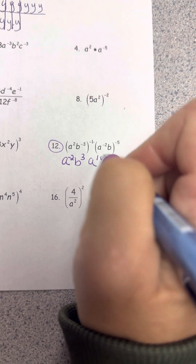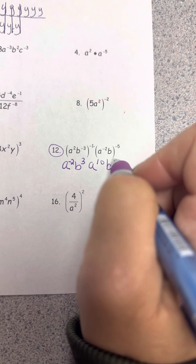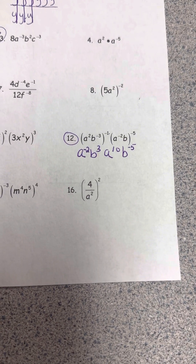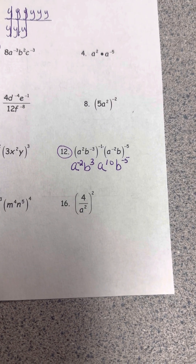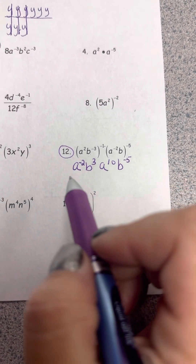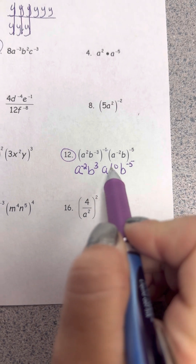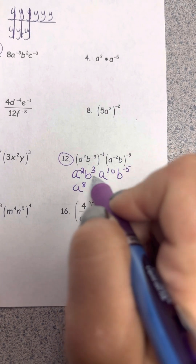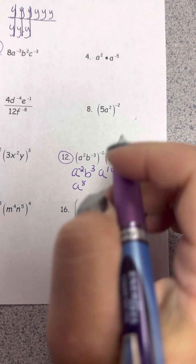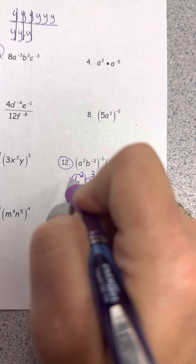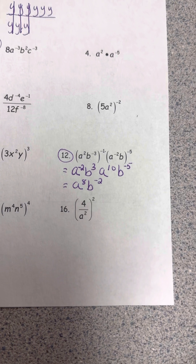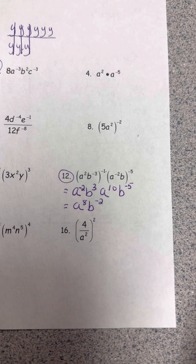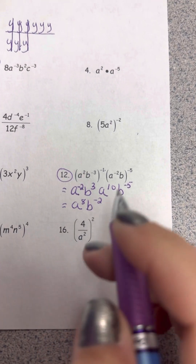Continuing: a to the negative second to the negative fifth — multiplying gives a to the tenth. Then b just gets a negative five since there's nothing to multiply. Now I'll combine the like bases. The a's are written more than once, so I add the exponents: negative 2 plus 10 gives me 8. For b: 3 plus negative 5 gives me negative 2. I've gotten rid of parentheses and combined like terms.